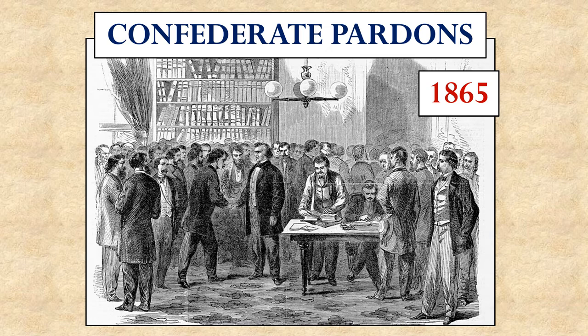After Lincoln died, Andrew Johnson tried to continue his more generous practices toward the South. One of the things he did was grant a presidential pardon — as he is empowered by the Constitution to do — to all those who had taken up arms against the United States with less than $20,000 in property. This essentially forced the rich people in the South to petition him personally to be pardoned so they couldn't be prosecuted for crimes against the United States.